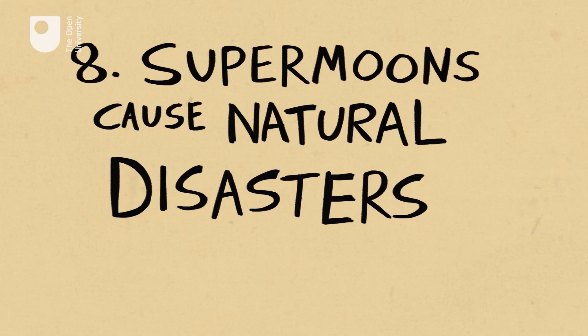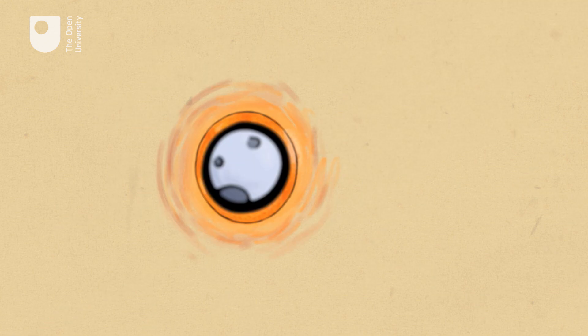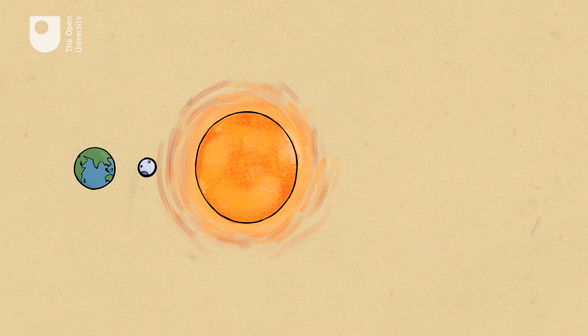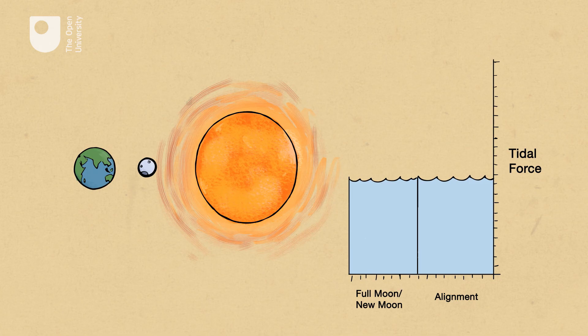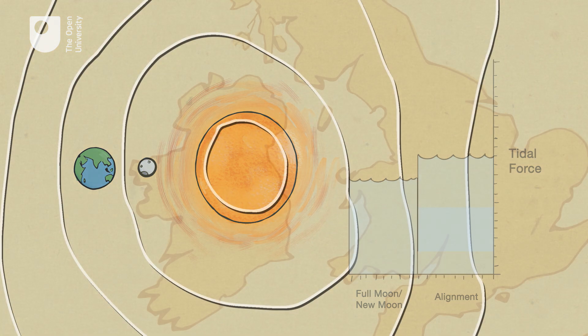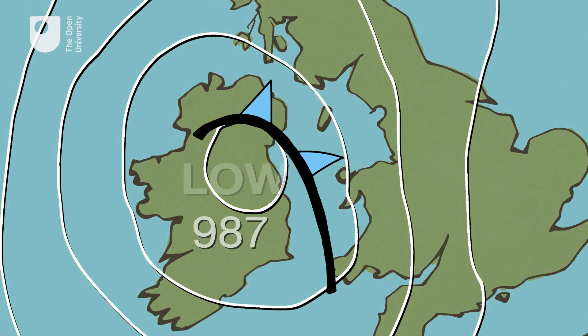8. Supermoons cause natural disasters. When the Moon is at its closest and the Earth, Moon and Sun are aligned—this can happen either at full moon or new moon—the combined tidal force is only 18% stronger than for the average full moon or new moon tide. Low pressure weather can cause a much higher tide than you would get merely because of a supermoon, but there is no established correlation with natural disasters.